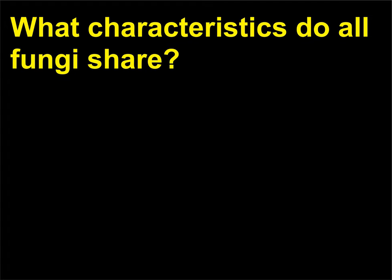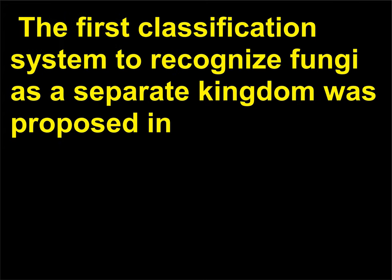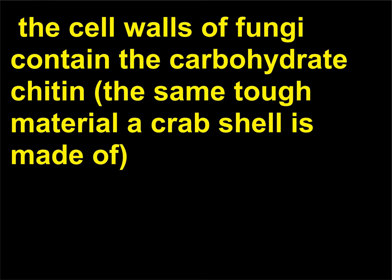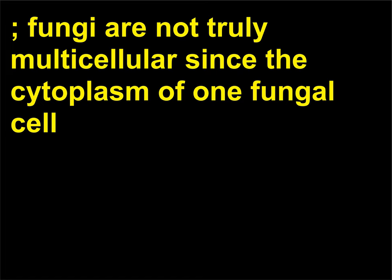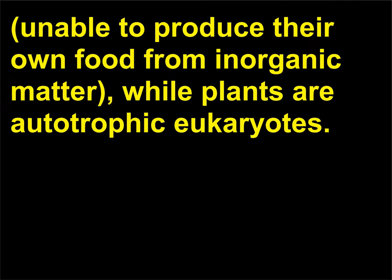What characteristics do all fungi share? In the earliest classification systems, fungi were classified as plants. The first classification system to recognize fungi as a separate kingdom was proposed in 1784. Researchers identified four characteristics shared by all fungi: fungi lack chlorophyll; the cell walls of fungi contain the carbohydrate chitin, the same tough material a crab shell is made of; fungi are not truly multicellular since the cytoplasm of one fungal cell mingles with the cytoplasm of adjacent cells; and fungi are heterotrophic eukaryotes, unable to produce their own food from inorganic matter, while plants are autotrophic eukaryotes.